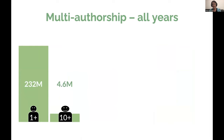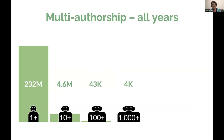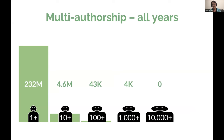We can see how many papers have 10 authors — surprisingly, it's just a small proportion of the whole body of literature. How many works have 100 authors? Not many — 43,000. We can go higher: 1,000 authors gives 4,000 works. When I ran my script last year I found two works with over 10,000 authors, but this year they disappeared, so that was probably an error that's been cleaned up from the dataset.